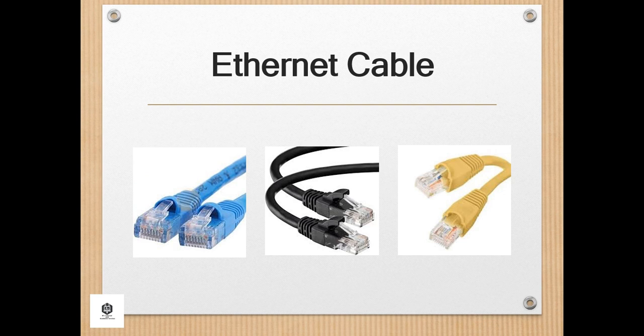The Ethernet cable, also known as RJ45, connects one end to a router or network switch and the other end to the Ethernet port on the computer. Ethernet is the standard for wired networking around the world. The Ethernet cable is based on the CAT5 twisted pair cable and is made from 8 individual wires. The Ethernet connector has 8 pins and looks similar to a phone plug, but is thicker and wider, and has a clip to help maintain a tight connection.